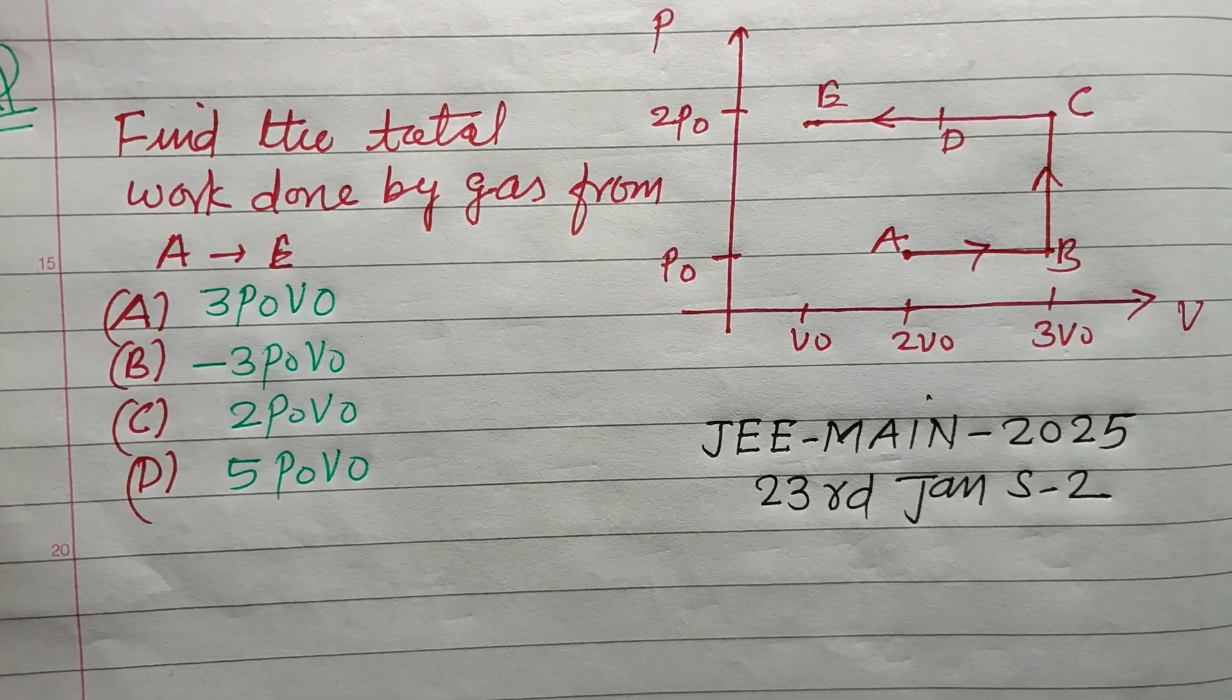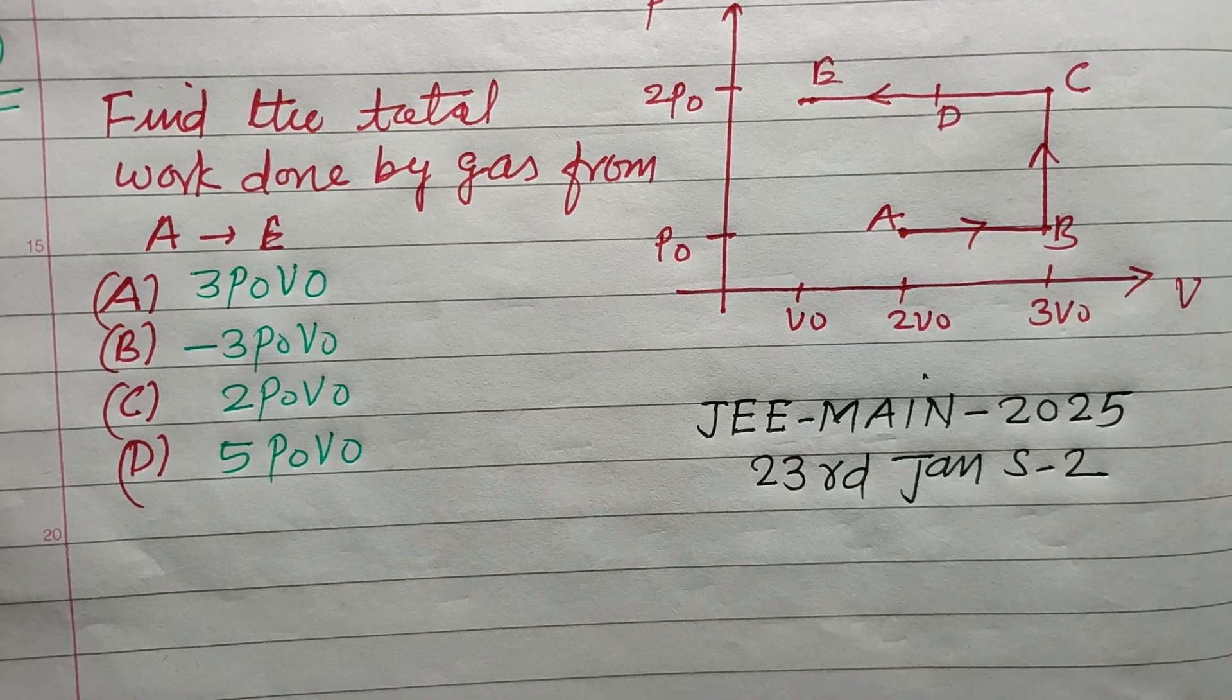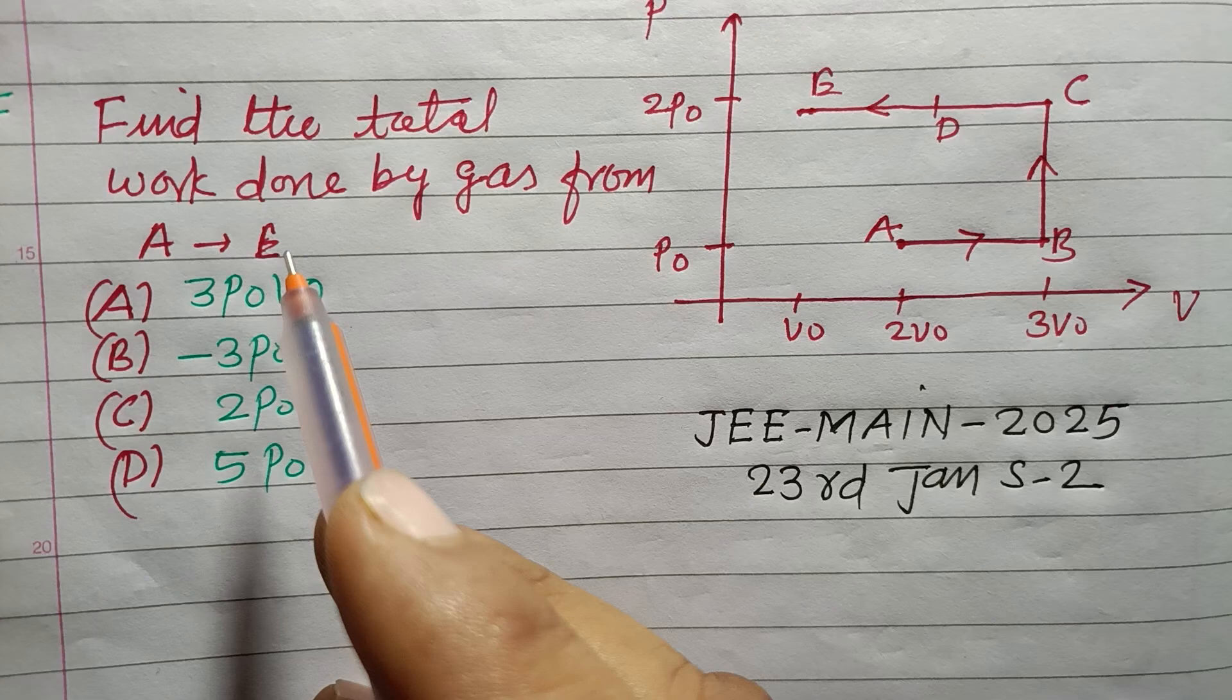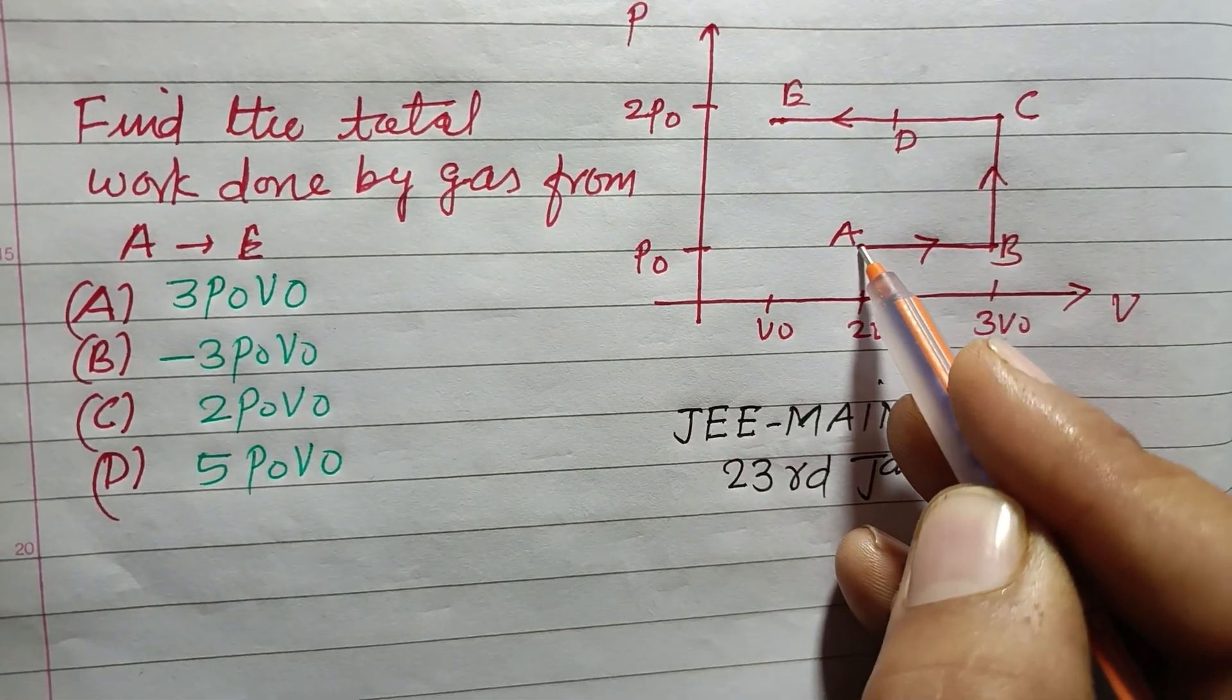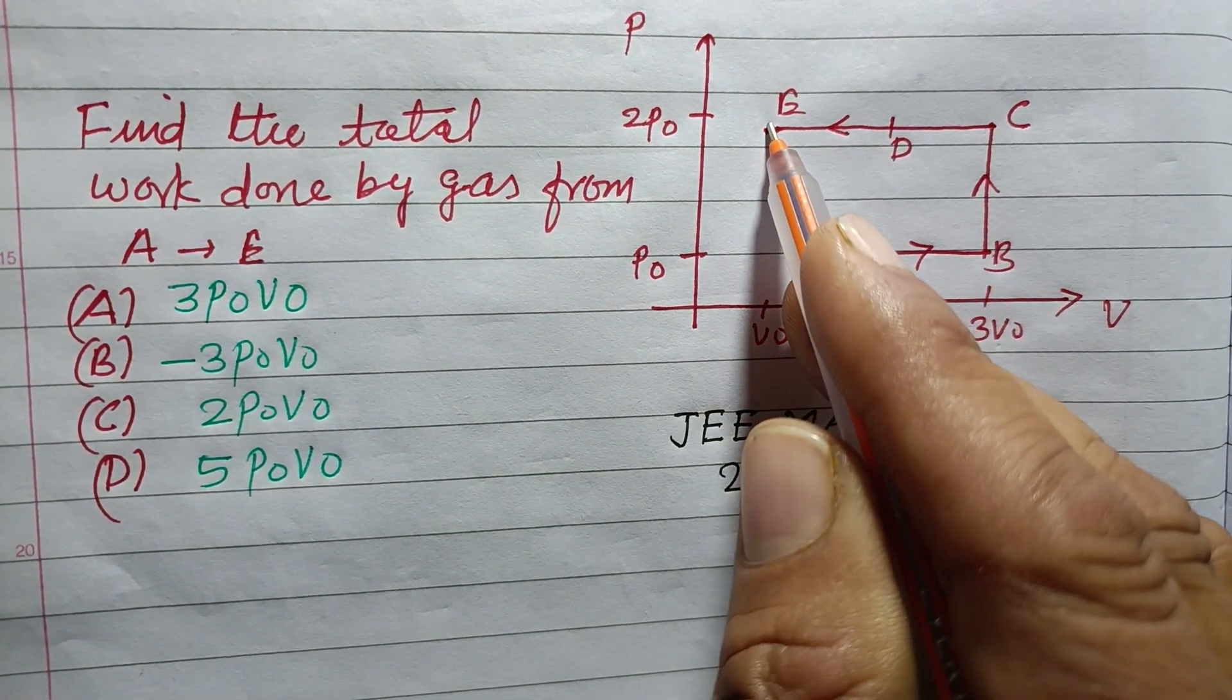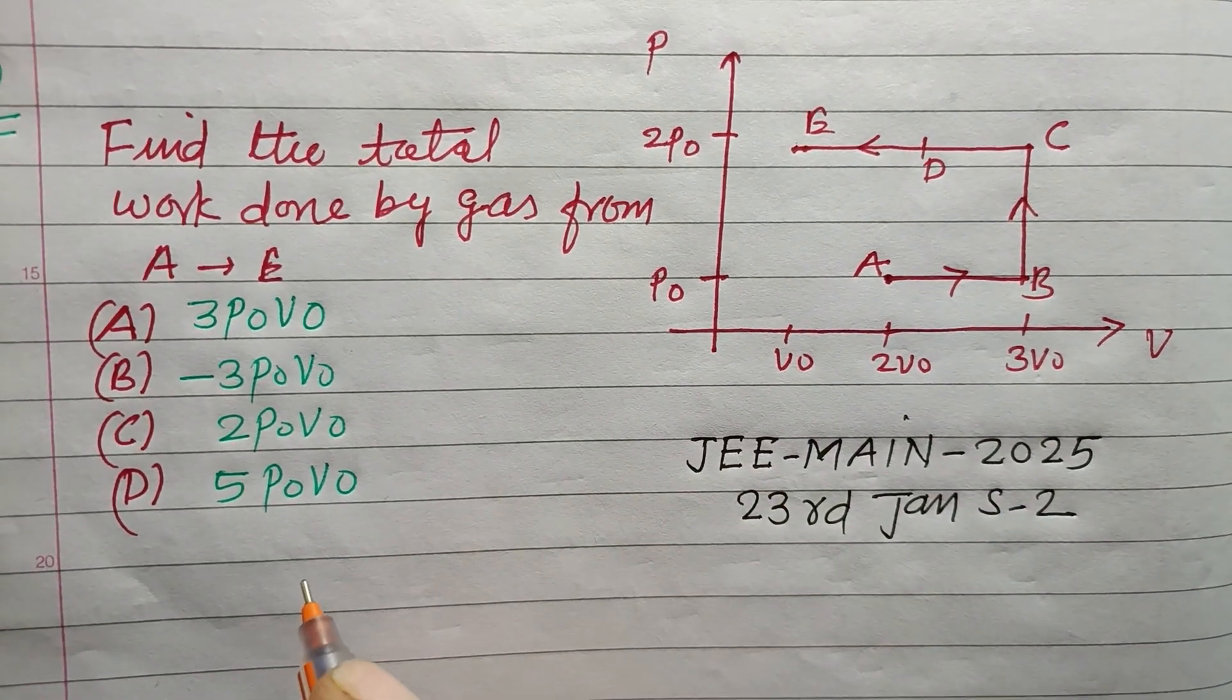Hello viewers, warm welcome to this YouTube channel. This is a question from JEE Main 2025, 23rd January shift 2. We need to find the total work done by the gas from A to E. The process starts from A to V, reaches at C, and finally ends at E.